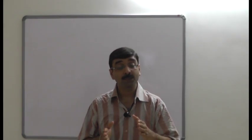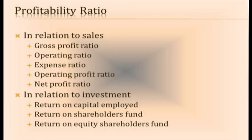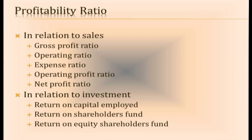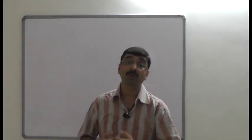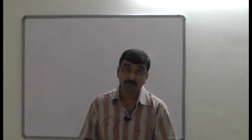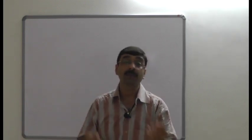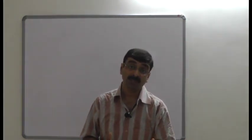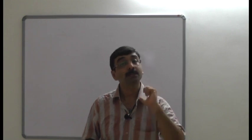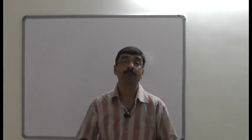If you want to compare profitability on the basis of sales, the ratios are: gross profit ratio, net profit ratio, operating expense ratio, operating profit ratio, and divisible profit ratio. If you want to compare capital employed or investments made by investors with the profitability derived against those investments, the ratios are: return on equity shareholders' fund (ROESF), return on shareholders' fund (ROSF), and return on capital employed (ROCE). All these ratios ultimately provide information on profitability.